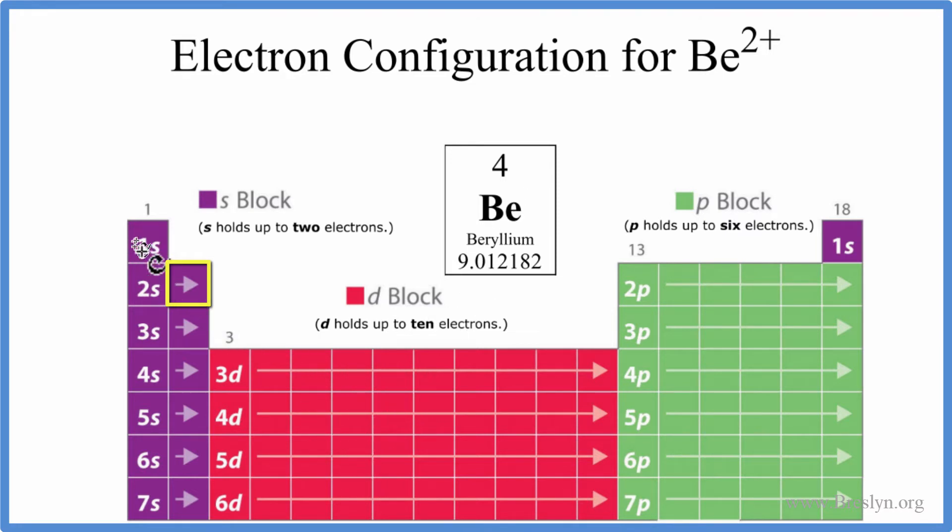So let's try this with beryllium. So we start out by looking at the atomic number of beryllium, that's four. That means it has four protons and since it's neutral, there's no plus or minus here on this beryllium. That means the number of protons is equal to electrons, we have four electrons.